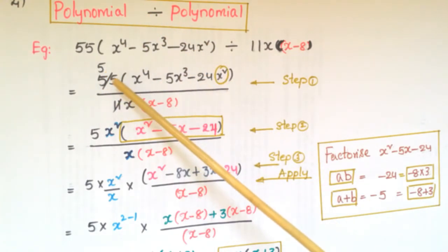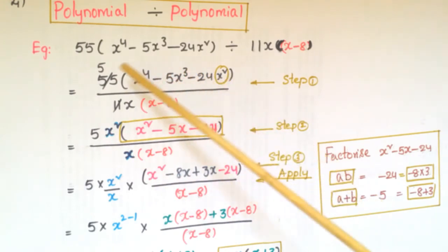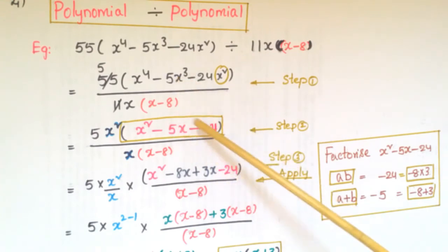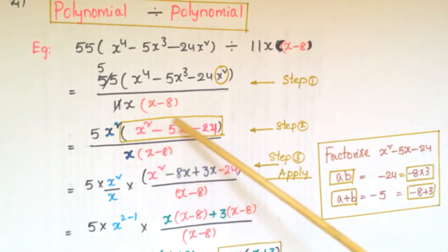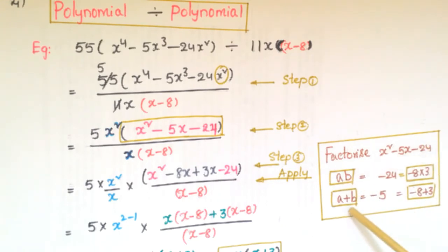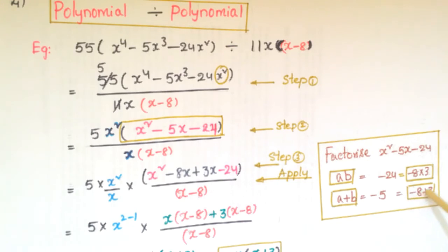First, simplify 55/11 = 5. In the numerator, x² is a common factor, so take out x²: we get 5 times x²(x² − 5x − 24) over x(x − 8). Now factorize x² − 5x − 24: we need two numbers whose product is −24 and whose sum is −5. Those numbers are −8 and 3.